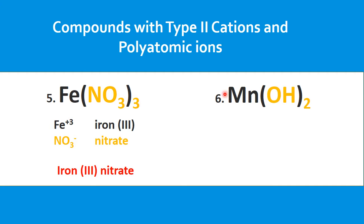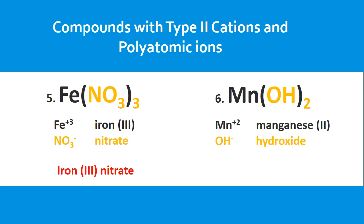Next, we have manganese and hydroxide. Hydroxide has a charge of negative 1. Since we have 2 of them, that's a total charge of negative 2. So manganese would have a charge of positive 2. That gives us manganese(II) hydroxide.